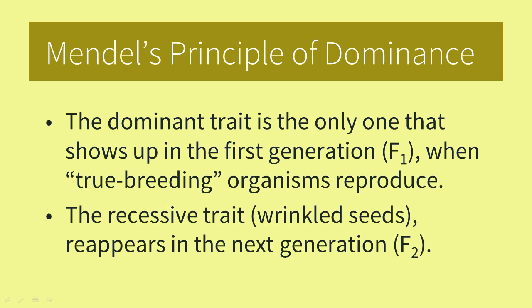The recessive trait, the wrinkled seeds, reappears in the next generation, which we call the F2. The recessive trait is thus masked by the presence of the dominant trait.